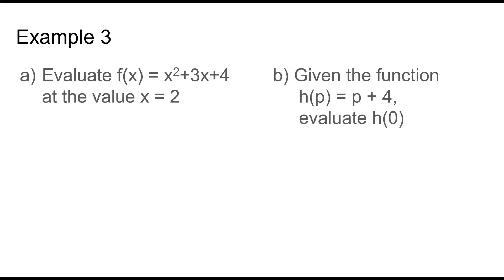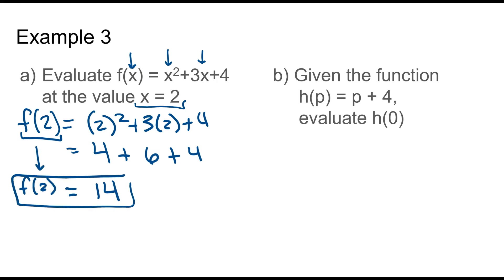Evaluate f of x is equal to x squared plus 3x plus 4 at the value x equals 2. So what they're asking is what is f of 2? So anywhere there was an x, we're going to replace it with the value 2. Now I like to keep the left side here alone. I'm not going to change that. A lot of times what can happen is you accidentally multiply 2f. It's not what that means. And then you can type it in your calculator, or you can show all your work. Once you have your answer, you can bring that down. f of 2 is equal to 14.